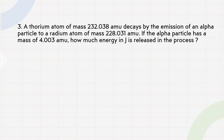Now let's try this question, which is a bit more complicated — the equation is not given. A thorium atom of mass 232.038 atomic mass units decays by emission of an alpha particle to a radium atom of mass 228.031 atomic mass units. If the alpha particle has a mass of 4.003 atomic mass units, how much energy in joules is released in the process? The masses of the reactants and products are all given.